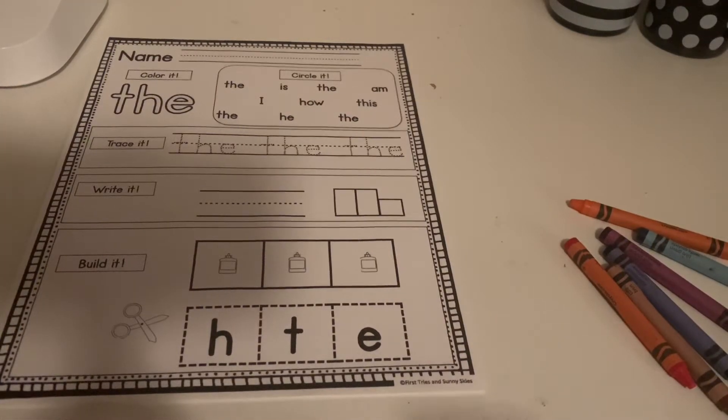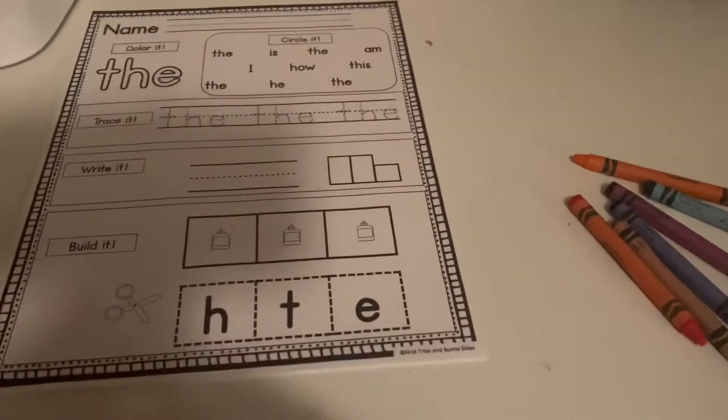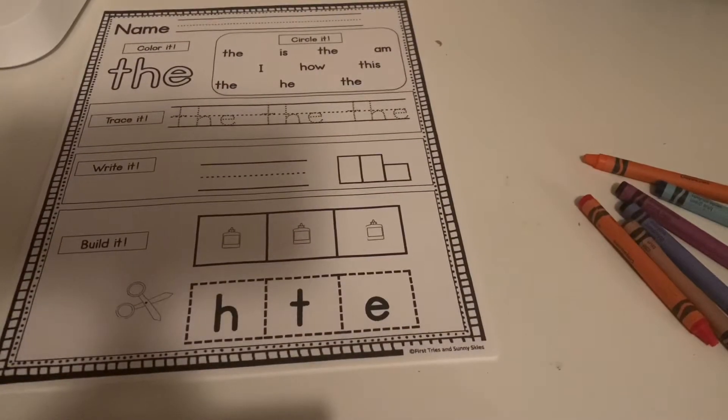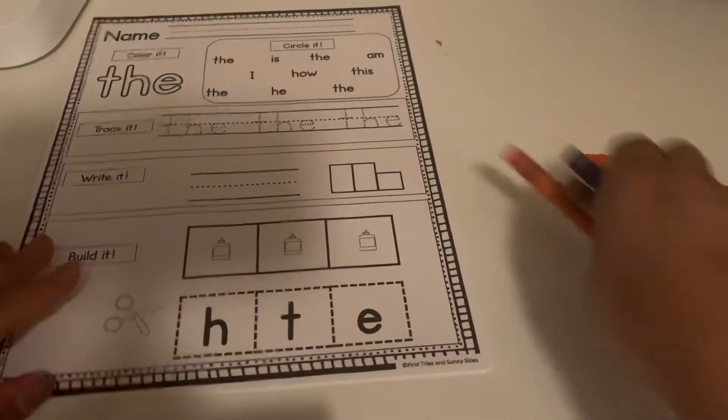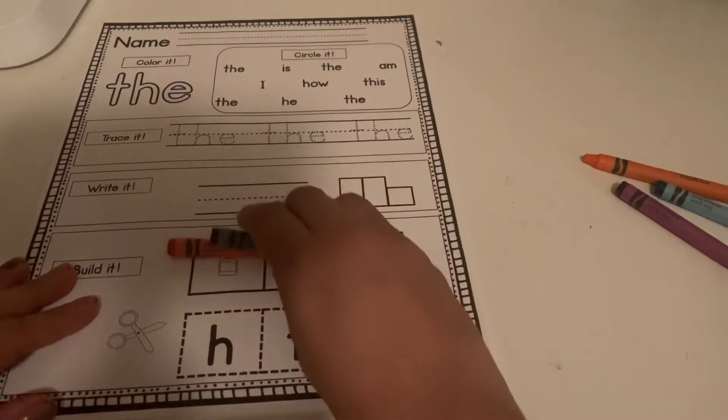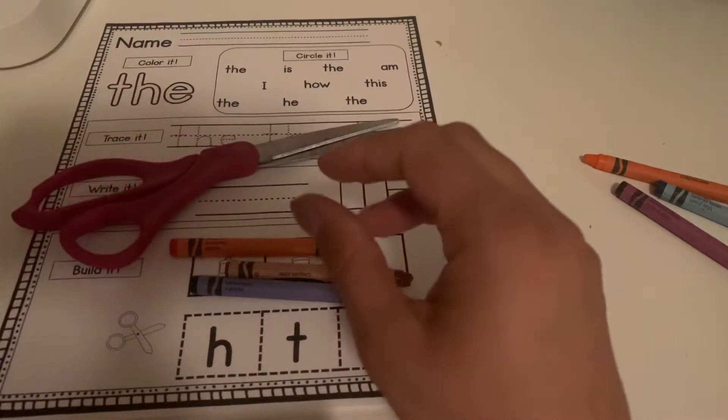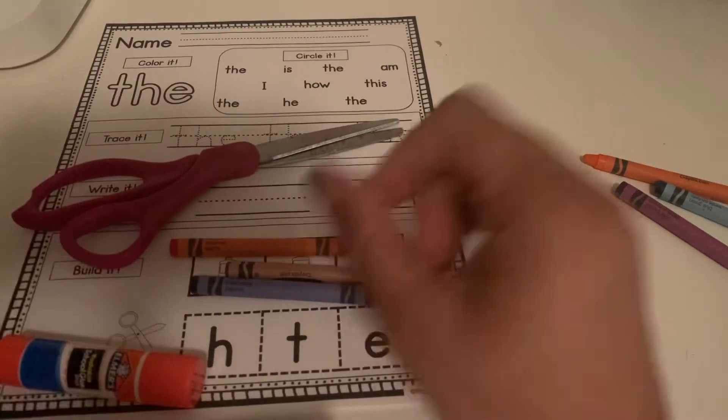Hey friends, it's Teacher Victoria. So today we're going to be working on the sight word 'the' worksheet. What we're going to need for this one is our paper, crayons, our scissors, and a glue stick.